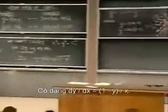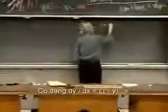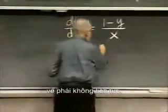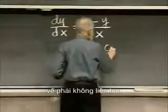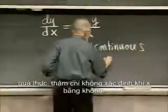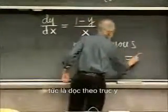It says dy dx equals one minus y divided by x. And now, I see the right-hand side is not continuous, in fact, not even defined when x equals zero, when along the y-axis.